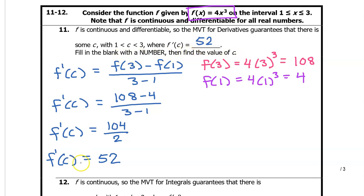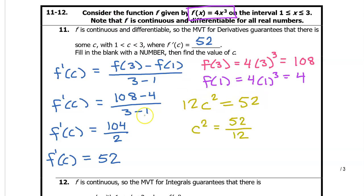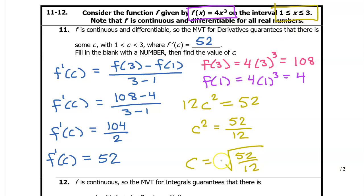Now we need to find the value of c guaranteed by the mean value theorem, so we need to find f prime and set it equal to 52. The derivative of f will be 12x squared, so 12c squared should equal 52. Dividing both sides by 12, we have c squared equals 52 over 12. No need to turn this into a decimal — we don't have a calculator. So c equals the square root of 52 over 12. Normally I would say plus or minus, but the negative root falls outside the interval from 1 to 3, so this is the final answer.